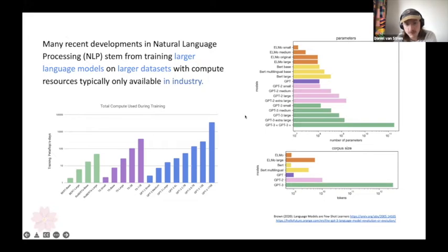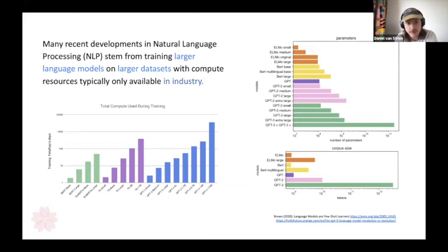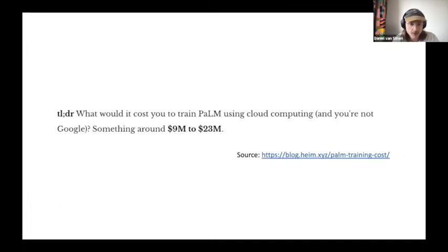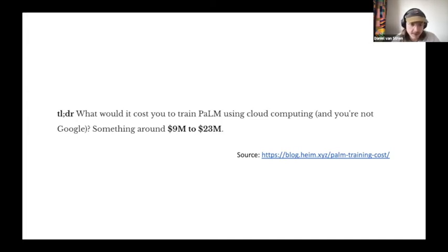Along with the models increasing in size, we're also working with larger and larger datasets during the training process. Basically, what this has resulted in is that the resources to create and train one of these language models has become increasingly available only to a fairly small group of tech companies within industry. As one recent example, Google's PaLM model — there's a blog post that estimates what it would cost someone else to recreate that using cloud computing — coming out between nine million and twenty-three million dollars. So even for very well-funded academic research institutions, this is likely not something they can directly work on.